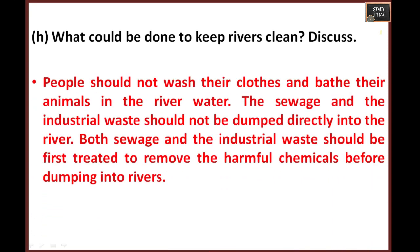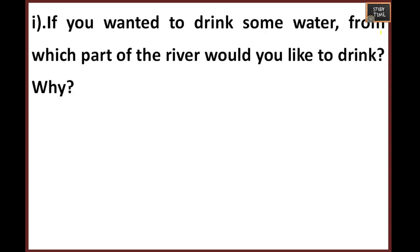What could be done to keep rivers clean? People should not wash their clothes and bathe their animals in the river. Sewage and industrial waste should not be dumped directly into the river. Both sewage and industrial waste should first be treated to remove harmful chemicals before being released into the rivers. By this way you can keep the river clean.